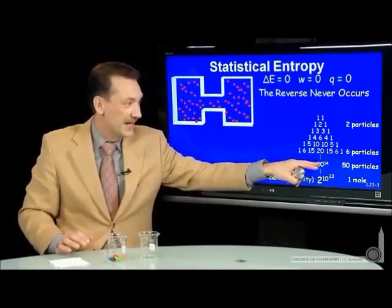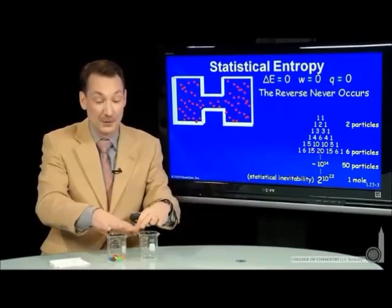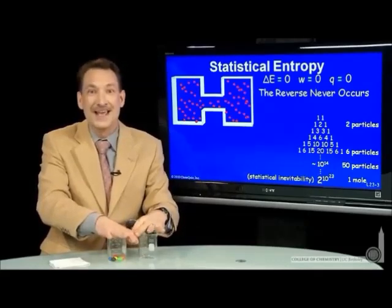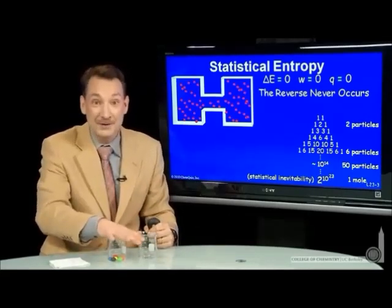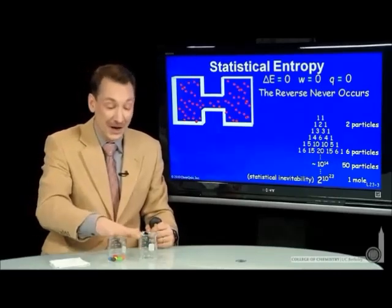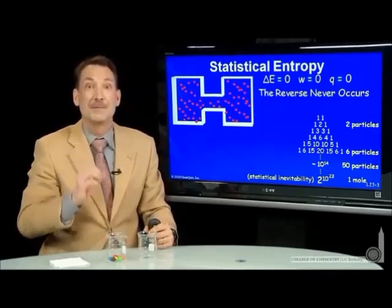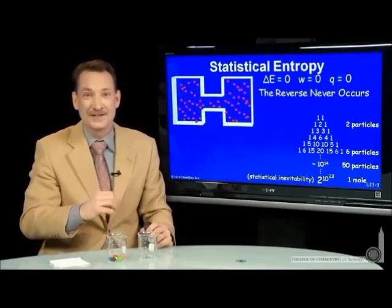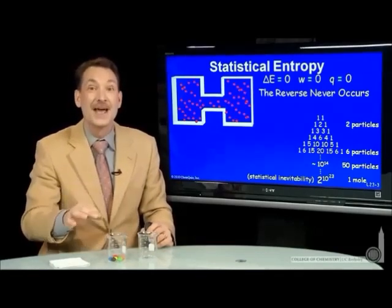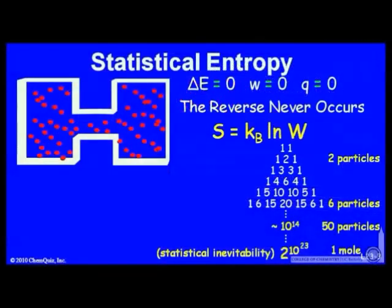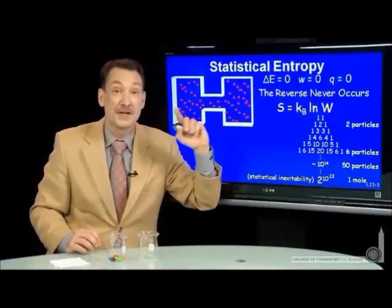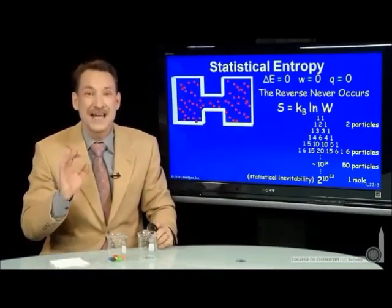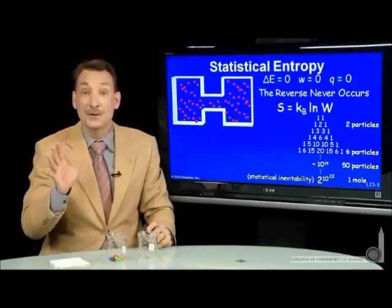The most likely arrangement is the one with the most possible microstates. For 50 particles, there were 100 trillion possible microstates — a very large number of ways to arrange that particular arrangement. We're going to call this number of accessible microstates the entropy of the system. We define it as Boltzmann's constant times the natural log of the number of microstates. This is our new thermodynamic parameter.